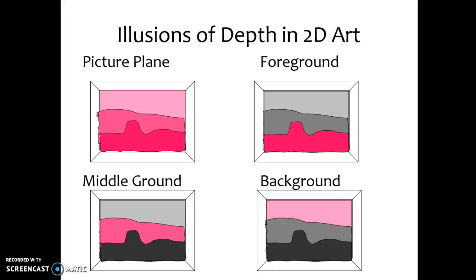The ground or area that is closest to the viewer is called the foreground. The area that is in between the farthest and the closest is called the middle ground. And the area farthest away from the viewer is called the background.